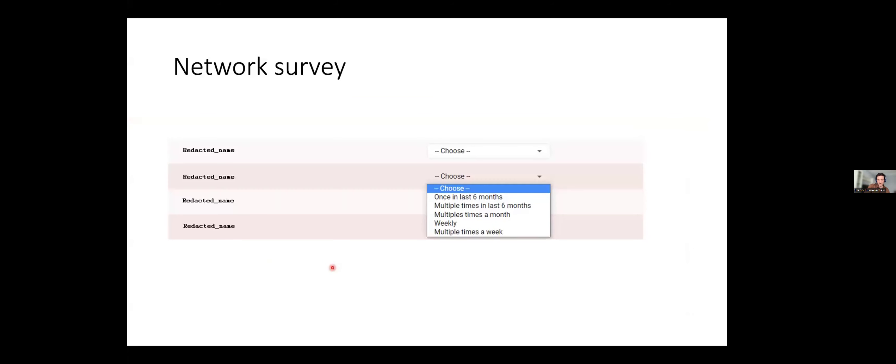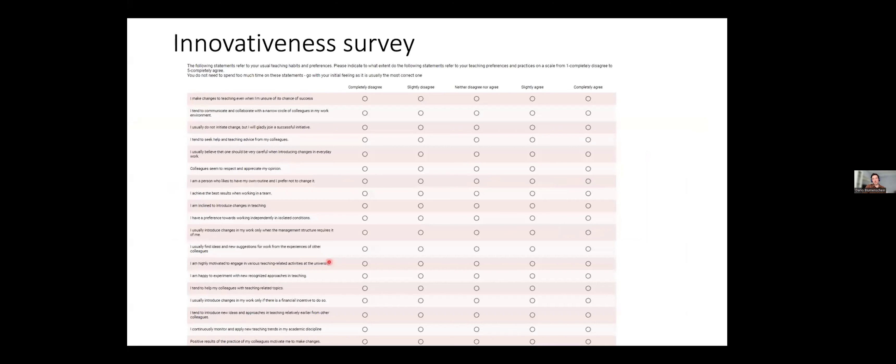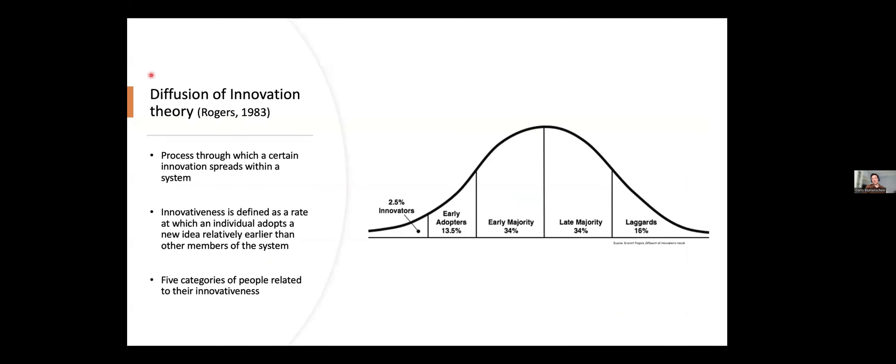That resulted in us having two separate networks that we can look at, and they were also asked at the same time to complete a survey that measures their rate of innovativeness relative to their peers. And I will show you how both of these things look like. This would be the network survey where we removed the names, but there was a list of all staff at the department. And you could choose how often did you talk in the last six months about teaching, and then you were asked to say the same thing. How often have you talked about research-related topics in the last six months? And then you can choose from these five options.